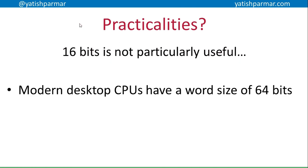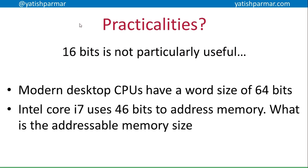That's why up until recently we were using 32-bit CPUs, and nowadays we're all using 64-bit CPUs. The Intel Core i7 uses 46 bits to address memory — it has a 64-bit bus, two bits are used for the addressing mode, and the rest for the instruction opcode. With 46 bits to address memory, you should be able to work out how much memory an Intel Core i7 can address — it's quite a large amount.